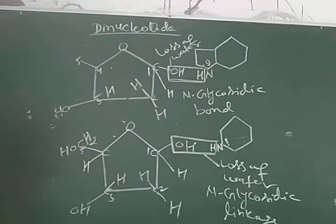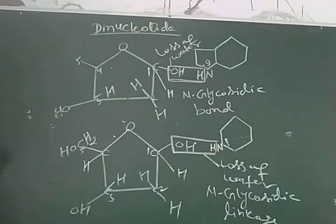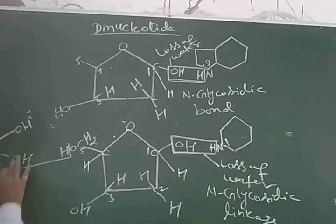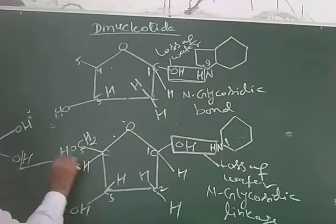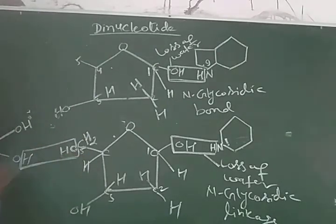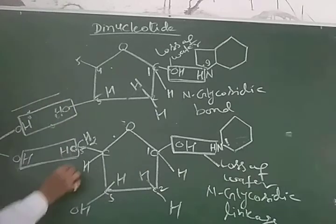These two nucleosides are attached by a phosphate to form a nucleotide. The phosphate has OH groups, and bond formation occurs here with a loss of a molecule of water. There are two bonds formed — these are called the phosphodiester bond.